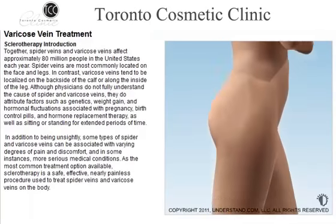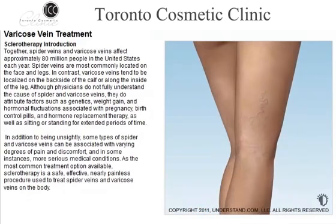Together, spider veins and varicose veins affect approximately 80 million people in the United States each year. Spider veins are most commonly located on the face and legs. In contrast, varicose veins tend to be localized on the backside of the calf or along the inside of the leg. Although physicians do not fully understand the cause, they attribute factors such as genetics, weight gain, hormonal fluctuations associated with pregnancy, birth control pills, and hormone replacement therapy, as well as sitting or standing for extended periods of time.